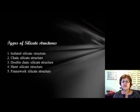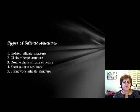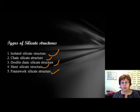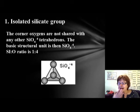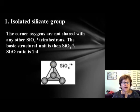Based on how oxygen atoms are shared, we have progressively more complex silicate structures: isolated, chain, double chain, sheet, and framework. The isolated — also called island silicates — have four oxygens around a central silicon, forming a polyatomic anion with four negative charges. Cations are distributed among these tetrahedrons to fulfill those charges.